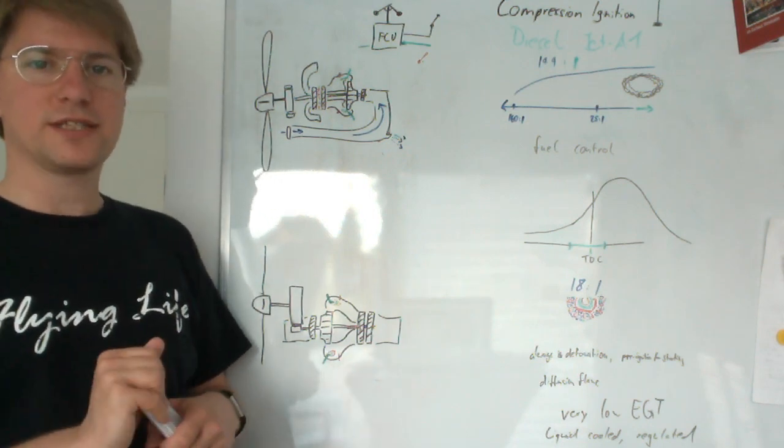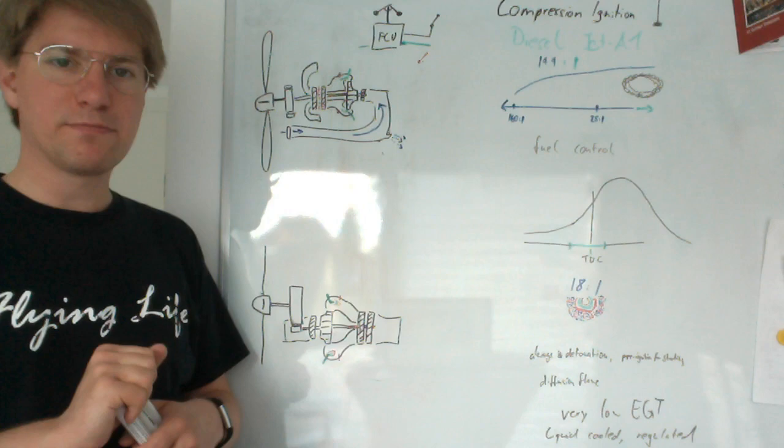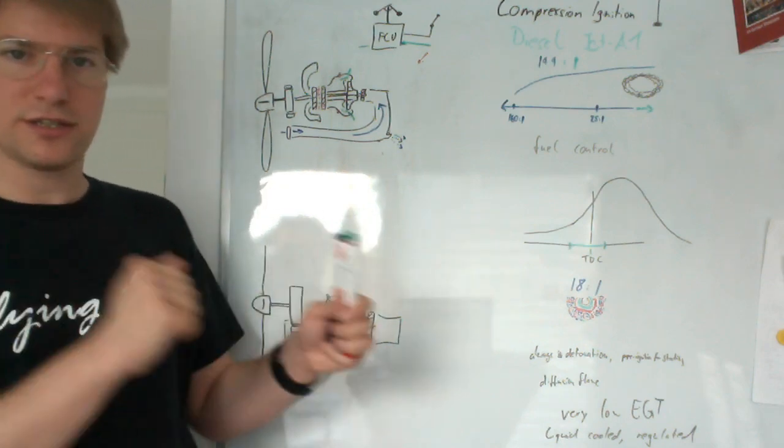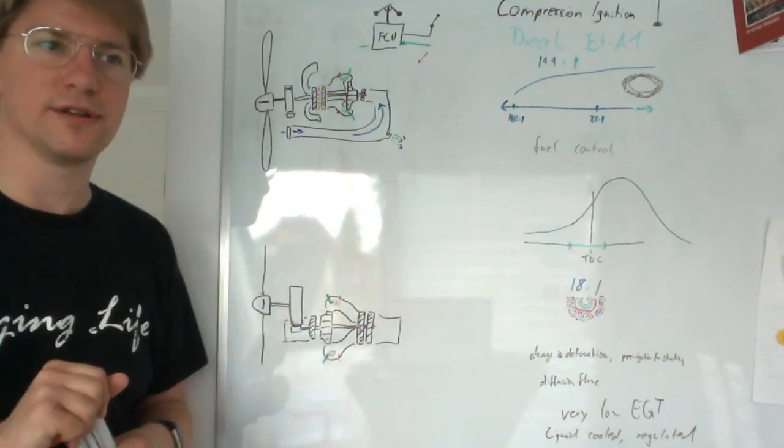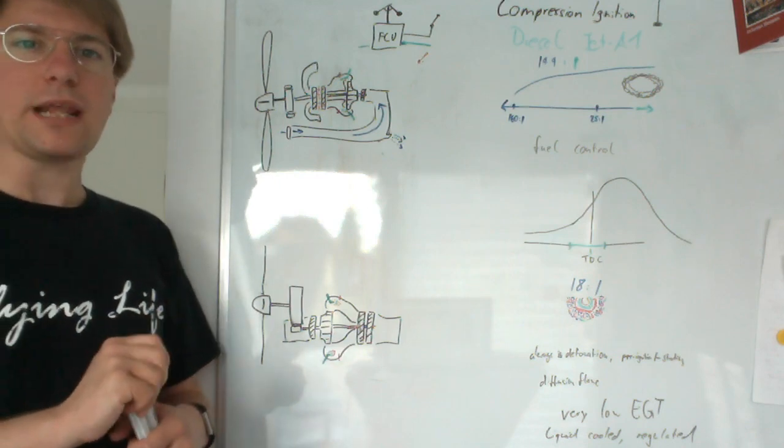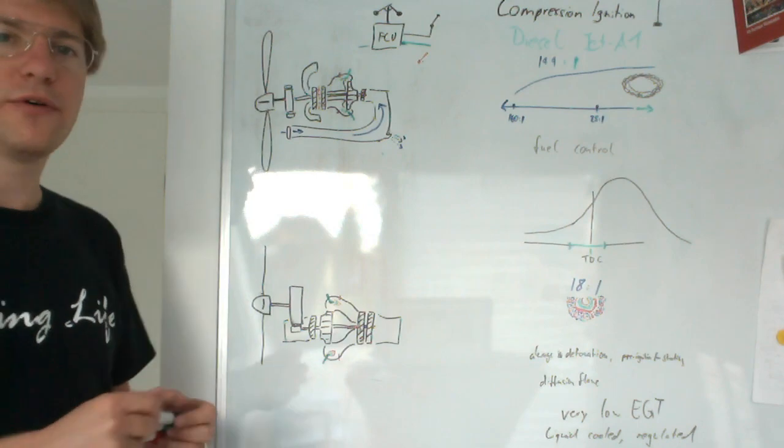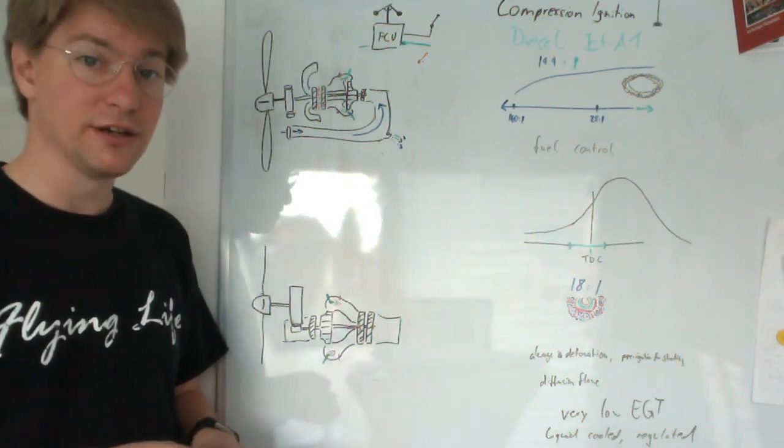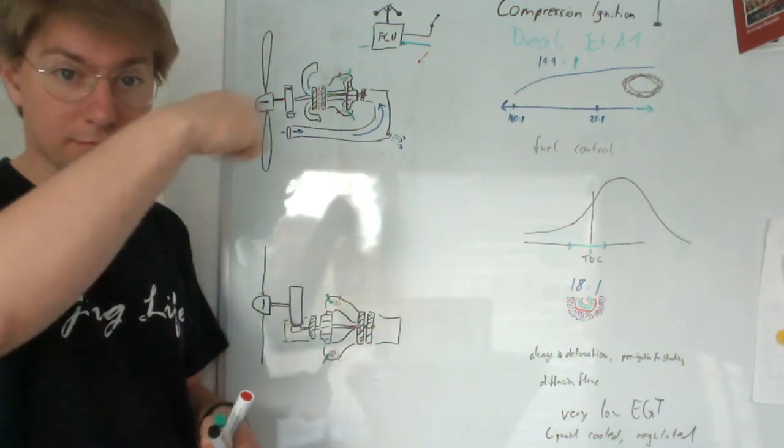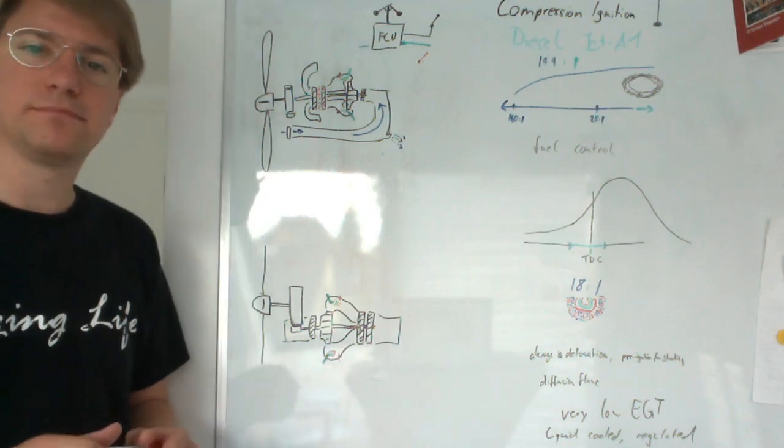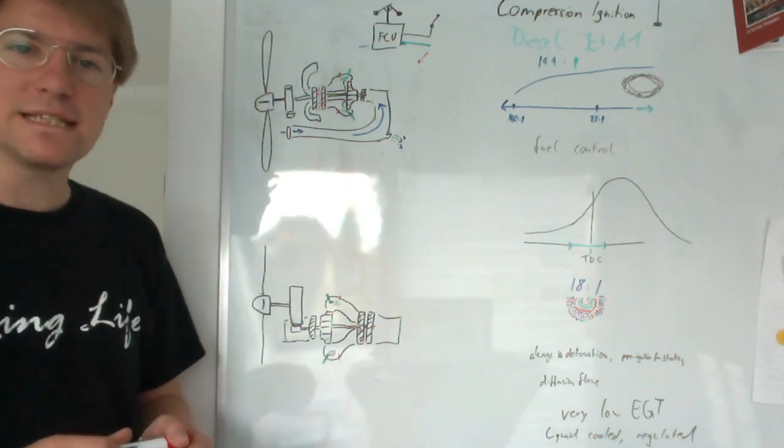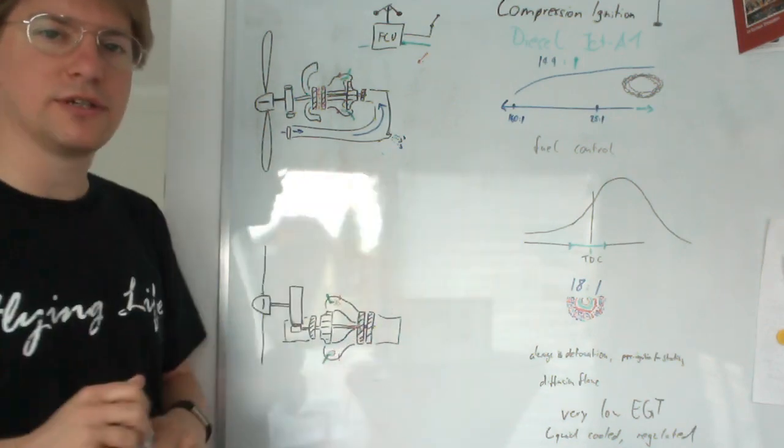Both of these engine types are reciprocating engines with pistons moving back and forth in cylinders. In this video, I will show you how the turboprop engine, which is not reciprocating but constantly spinning, is basically a stretched out diesel engine.